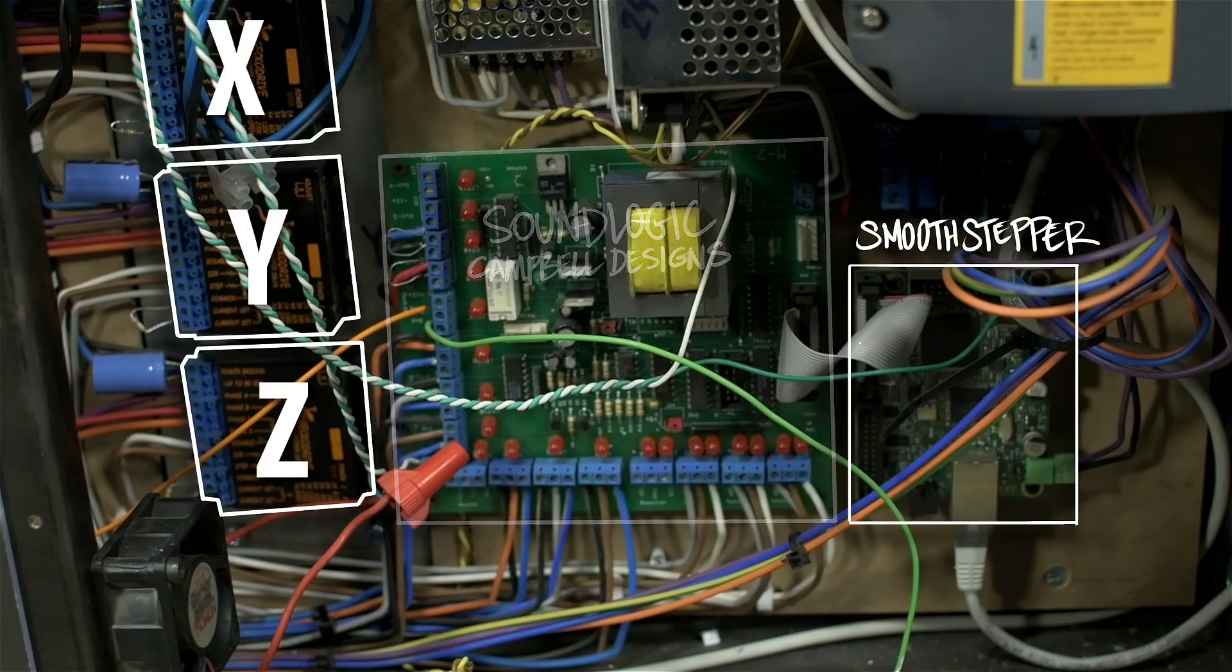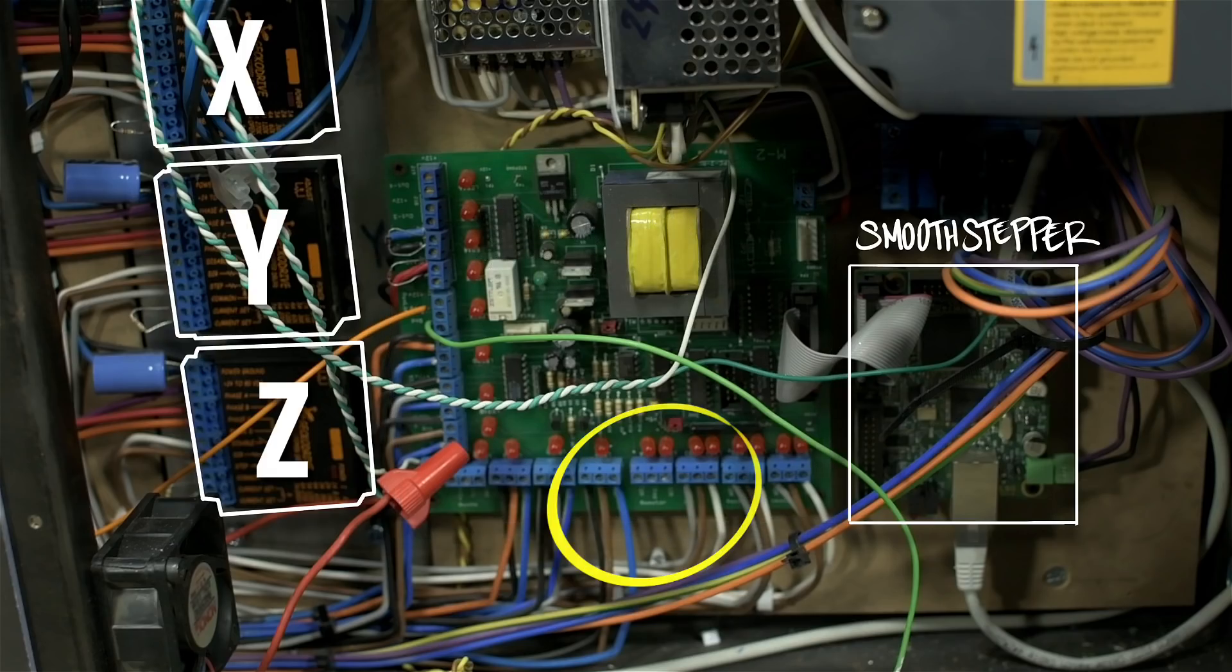This breakout board could handle another axis, and that's what I'm going to be tying into. So I'll have X, Y, Z, and A, and A is what will be running the new stepper. Because that Lexium stepper has already got drive circuitry in it, it doesn't need another Gecko drive in this case. All I need is power, pulse, and direction.